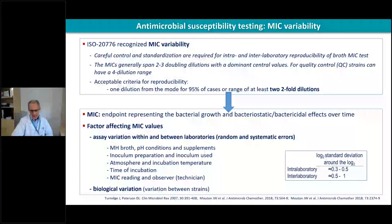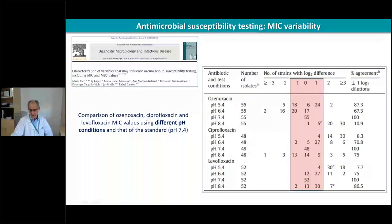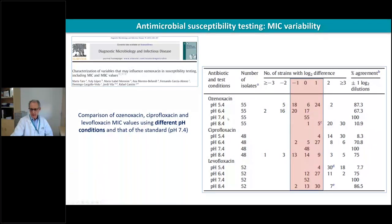This is well recognized in different studies, some published by the group of Johann Mouton. Intra-laboratory variability is lower than one dilution, but when comparing isolates across different laboratories, this value can be higher than the intra-laboratory variation. For example, with ozenoxacin — a fluoroquinolone used for topical skin infections — you can see how modifying the pH of the medium causes the MIC values to shift upward compared to the standard neutral pH recommended in the ISO guidelines.